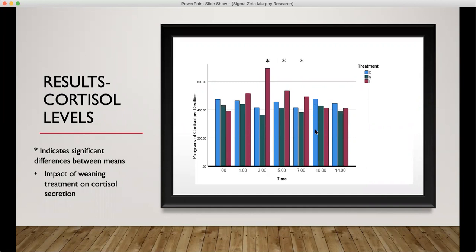The three groups shown in blue is the control group, which was left with their moms and allowed to nurse from them. The nose flap group, which had a nose flap and was allowed to be with their moms but was not allowed to nurse from them. And the traditionally weaned group, which was separated from their mom by a pipe corral. On the x-axis of this graph we see that it is time. Time zero is when we started, and so on are days that we collected samples on. The y-axis shows picograms of cortisol per deciliter.